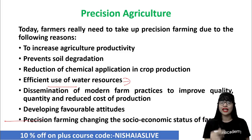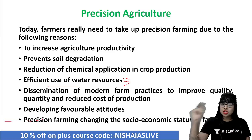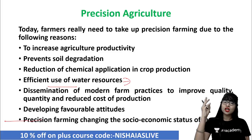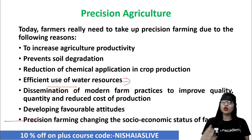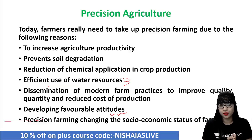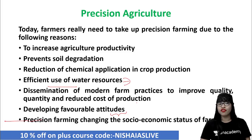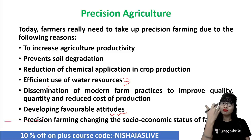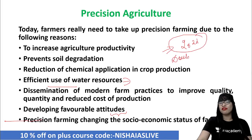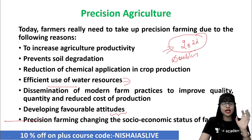Another reason why farmers need to take up precision farming is the spreading or dissemination of modern farm techniques. Through this, you will be able to improve the quality, quantity, and also reduce the cost of production. Also, developing favorable attitudes from farmers in this modern era of developing technology-driven agriculture. Thus, the socio-economic status of farmers will definitely be changed by adopting precision farming, because it will give better output and better income. You can also connect this with the government of India's big objective — doubling the income of farmers by the year 2022.